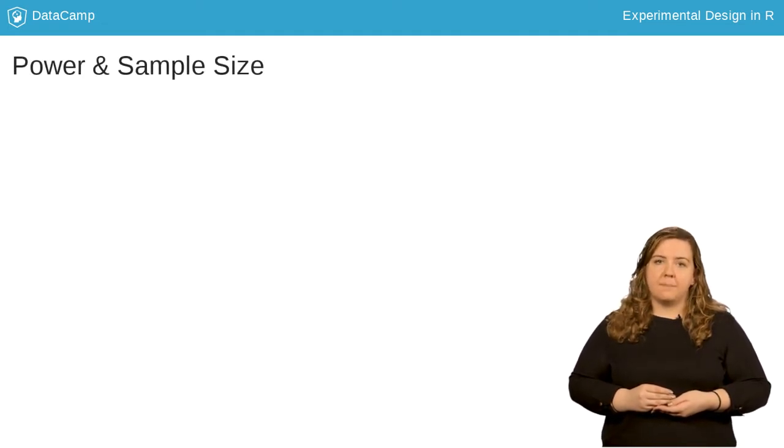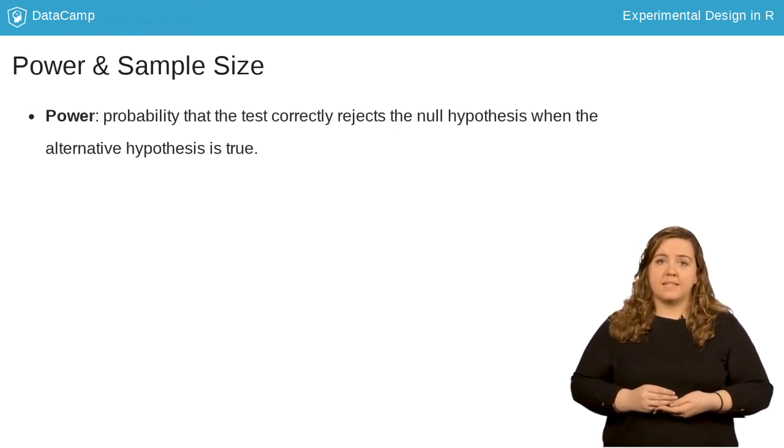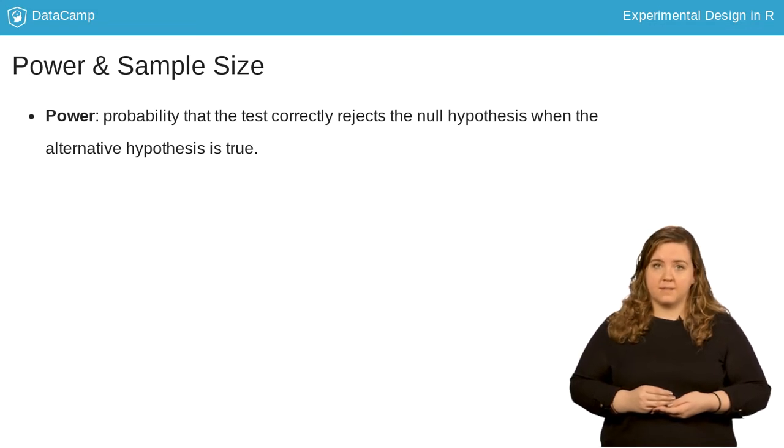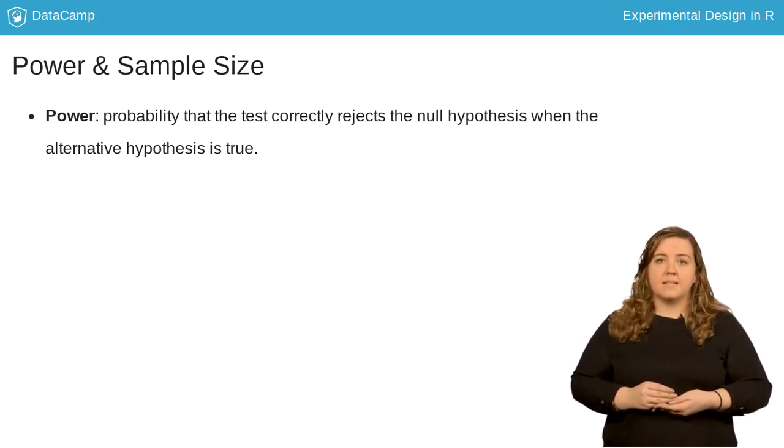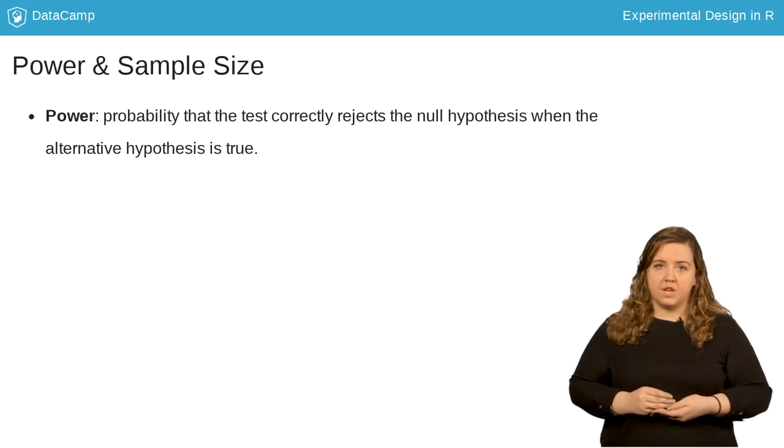Directly related to hypothesis testing is the idea of power. Power is the probability that the test correctly rejects the null hypothesis when the alternative hypothesis is true. One golden rule in statistics is to aim to have 80% power in your experiments, which you'll need an adequate sample size to achieve.